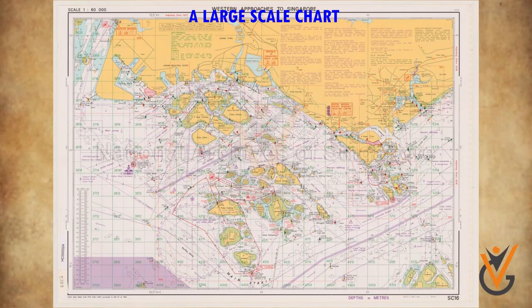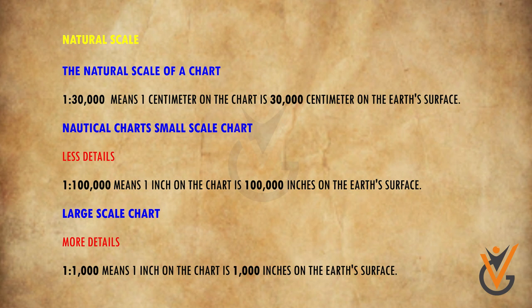A large scale chart represents a smaller area of the earth's surface, providing more detailed information about that area. This chart is used for navigation of vessels. Coastal charts and approach-to-port or harbor charts are large scale charts. There are also various nautical publications carried on a ship to provide information to the navigator to assist in planning navigational voyages.